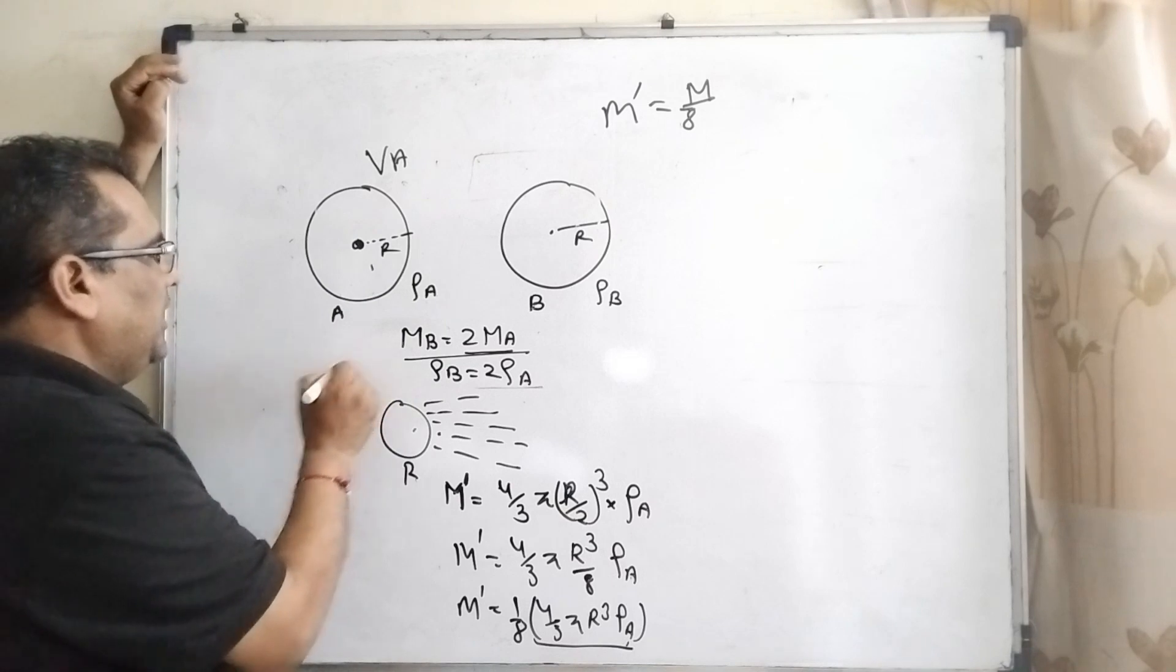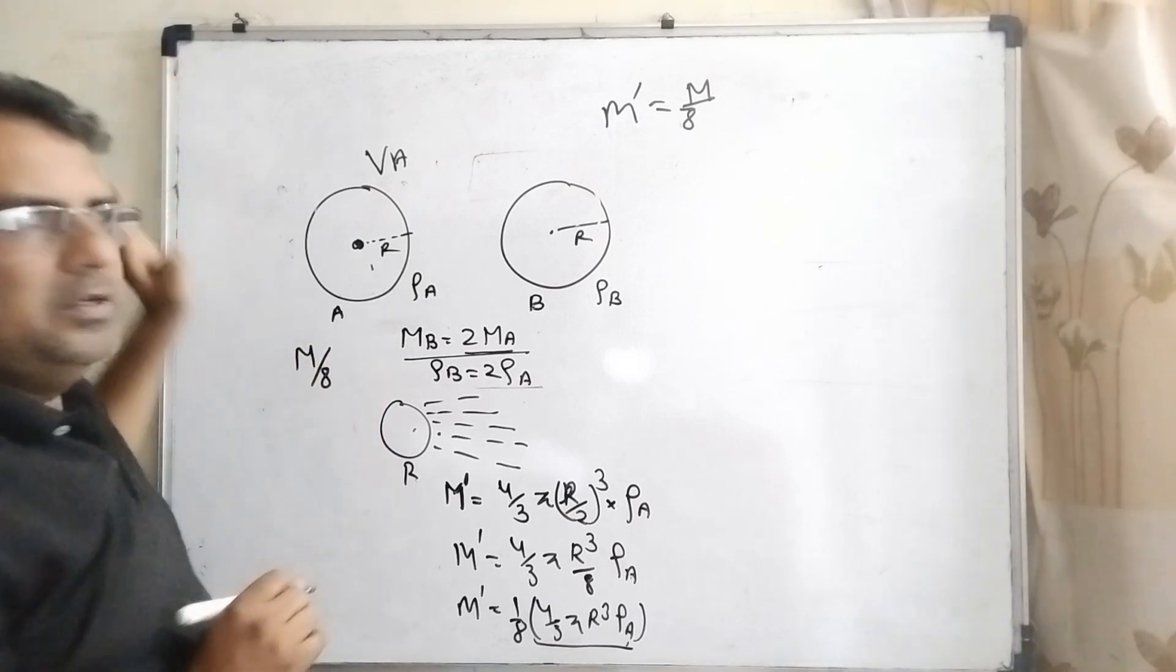This is the mass of star A, one-eighth part of this star. Now after interaction, its mass becomes Ma/8. Is it clear?